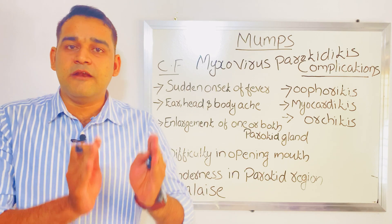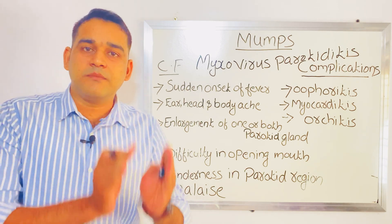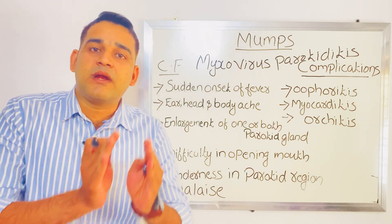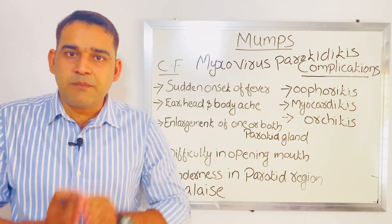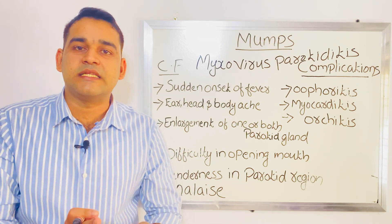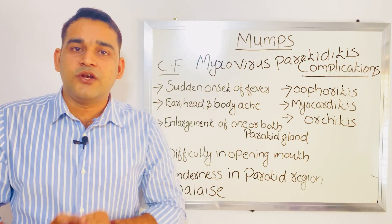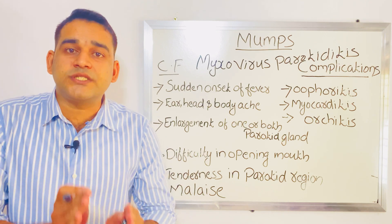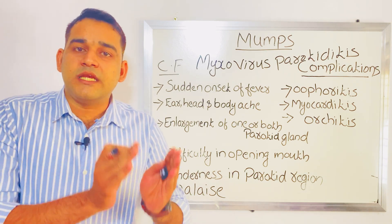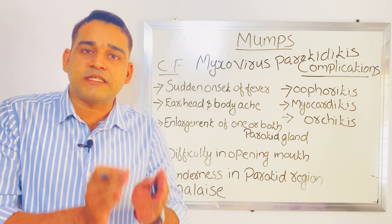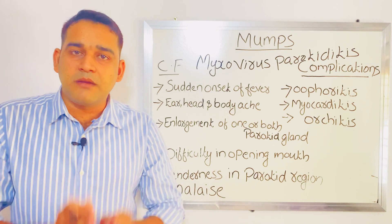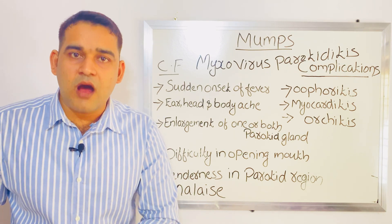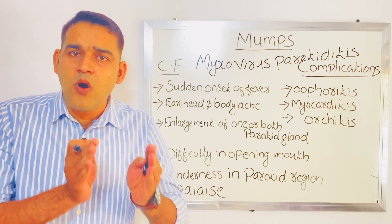The source of infection — from where we get mumps — is an infected case of mumps only. It also includes subclinical cases, meaning the disease in an early stage not yet showing any signs and symptoms.